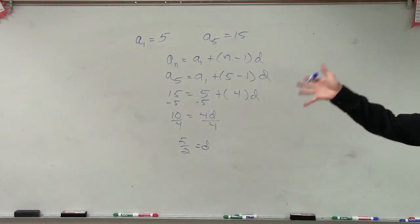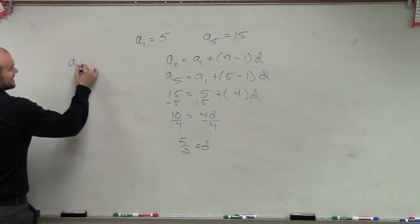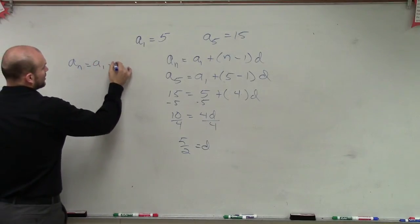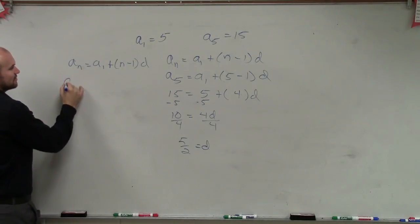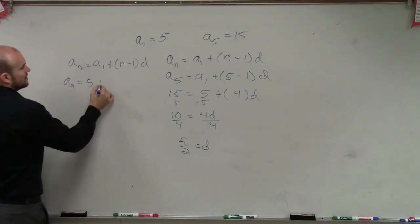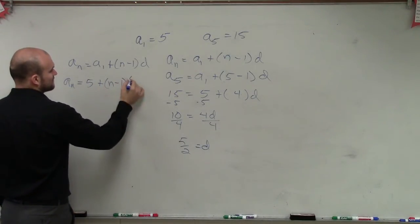So now what we're going to do is plug this into our formula. So again, we go back to our formula, which is a sub n equals a sub 1 plus n minus 1 times d. Well, now we know what a sub 1 is, so for any formula, we're going to have a sub n equals a sub 1, which is 5, plus n minus 1 times our difference, which is 5 halves.